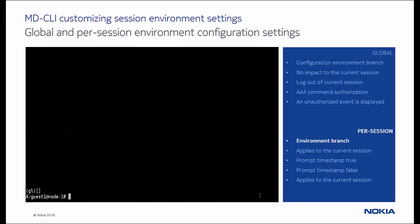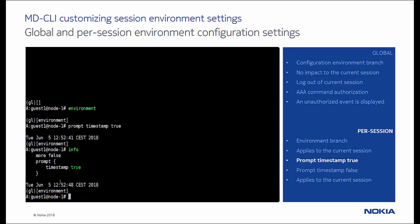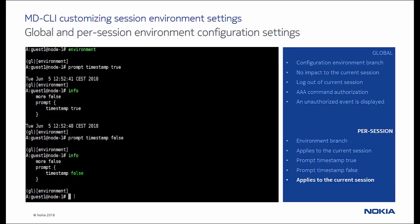Next we demonstrate the per-session environment, where the environment branch is accessed by entering environment at the operational mode root, or with slash environment from any other context. In this example we add a timestamp to precede the first prompt line by setting prompt timestamp to true, or omit the timestamp by setting prompt timestamp to false. We can clearly see that the per-session environment settings apply for the current session.